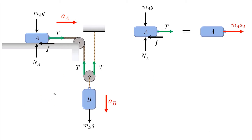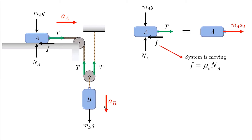If we have friction, we must consider our possibilities. First, if the system is moving — meaning the problem states there is an acceleration, velocity, or distance — then friction equals mu_k times NA. If you know block A moves to the right and block B moves down, the kinetic friction is always against the direction of motion. This is the only way friction makes physical sense: kinetic friction always opposes the direction of motion.